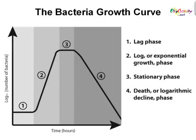Bacterial growth occurs when bacterial cells divide into two daughter cells by a process called binary fission. The resulting daughter cells are identical, providing that no mutational event occurred. Hence, local doubling occurs. This figure illustrates a typical bacterial growth curve with time in hours on the x-axis and log base 10 of the number of bacteria on the y-axis. Numbers 1, 2, 3, and 4 represent lag, exponential, stationary, and death phases, respectively.